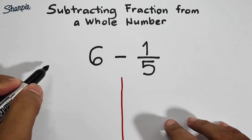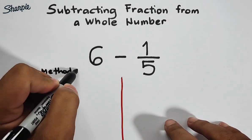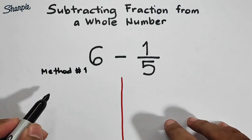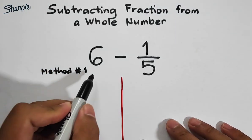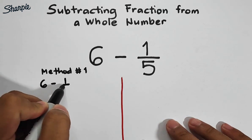Let's start with method number 1. We have 6 minus 1 over 5.